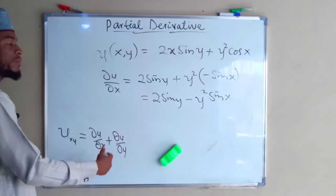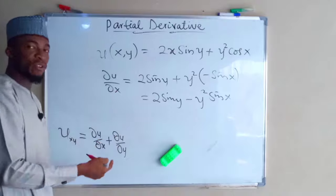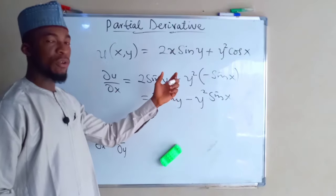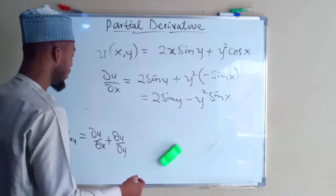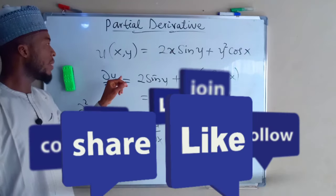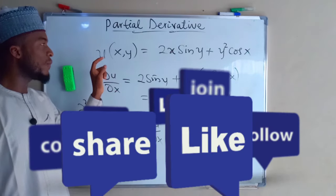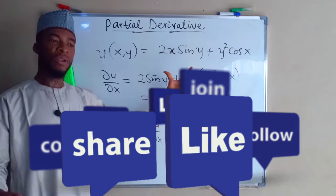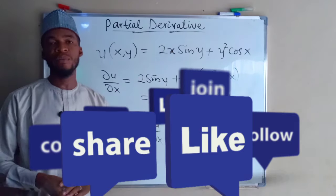You can do the same thing and find the derivative of u with respect to y — in that case, you are going to set x to be constant. In my next class, I'm going to show you how to find the partial derivative of a function in which the independent variable jointly depends on other variables.